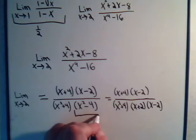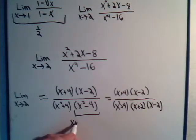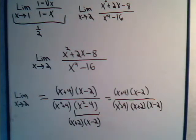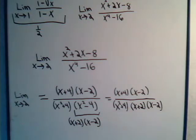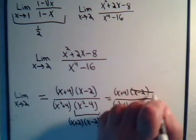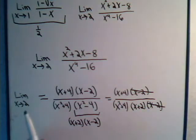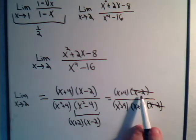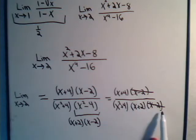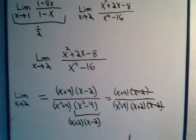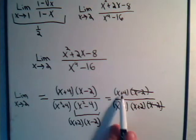So x squared minus 4 is x plus 2 times x minus 2. Plugging x equals 2 into either of those factors would give 0, but now the x minus 2 factor in the numerator and denominator cancel. That leaves us with x plus 4 divided by x squared plus 4 times x plus 2, and there's nothing to prevent us from plugging in x equals 2.